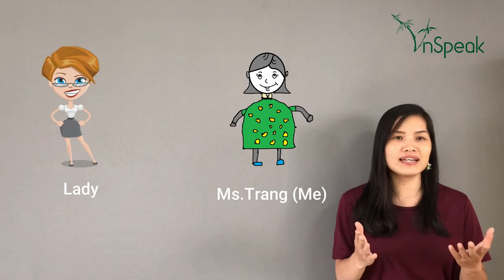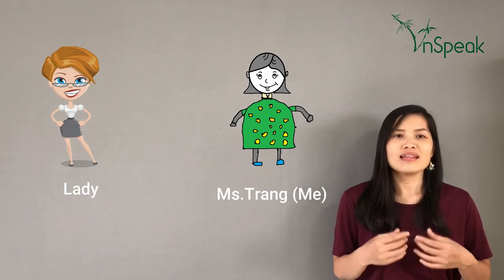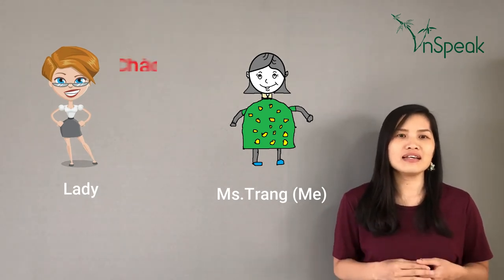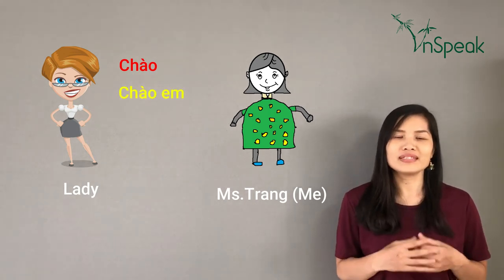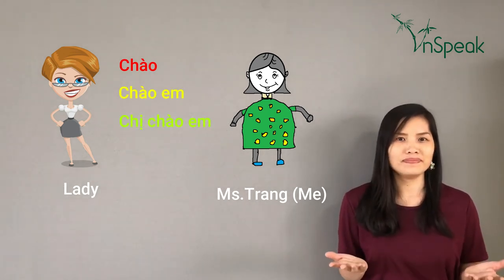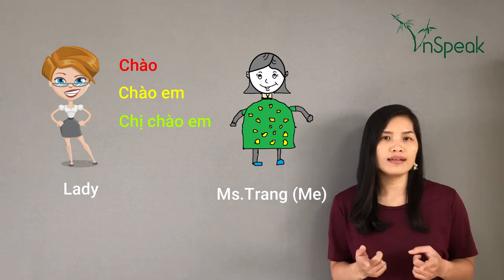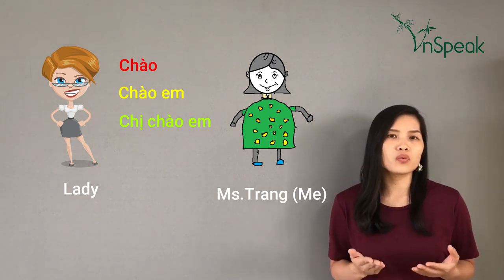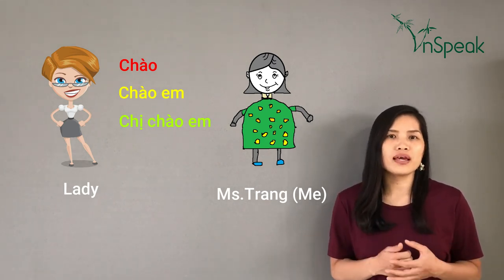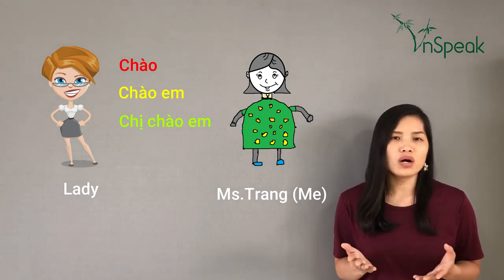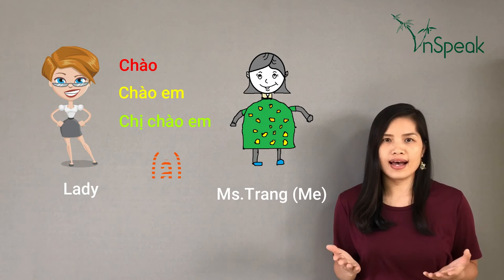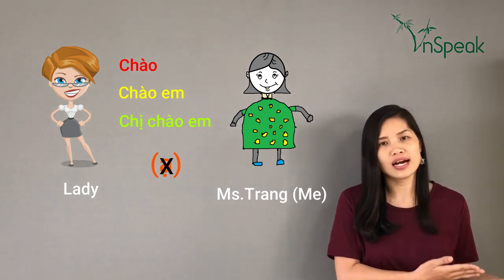Then the lady can say hello back to me. Remember that she is older than me, so she can say 'Chào,' 'Chào em,' or 'Chị chào em.' Remember that the younger one can use the word ạ to show their respect, but the older one does not use the word ạ when talking to the younger one.